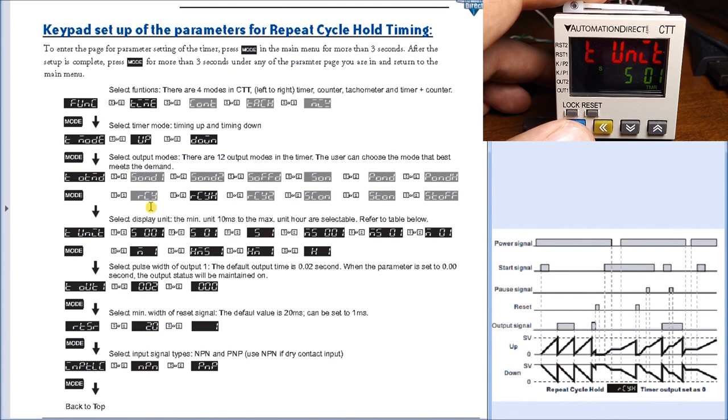Mode key again - this specifies our timing units. In our case we have 0.1 second. Our output is set for 0.00 which will maintain outputs so we see the output signal go on for a duration, off for a duration. Our reset is at 20 milliseconds and our input type is PNP, which goes back to the wiring. Hit it once more and it loops back to the beginning of our setup menu.